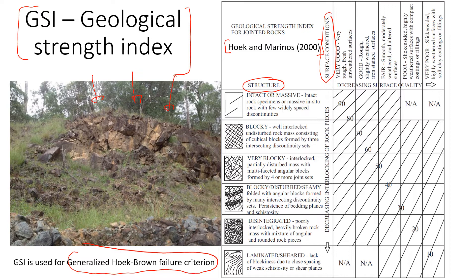For structure, we would see something like intact or massive rocks. In this case this is actually very good, because there are not many joints, which means the overall strength of the rock mass will be very high, and GSI will be pretty high. If there are no joints, GSI can be even 100 — but of course that usually never happens in real life. There are always joints, maybe one or two larger ones, so GSI will still be pretty high.